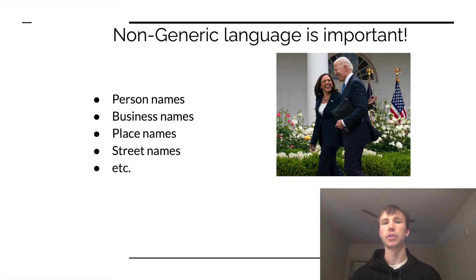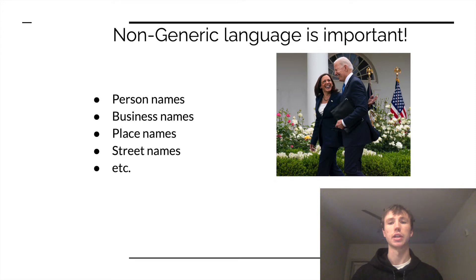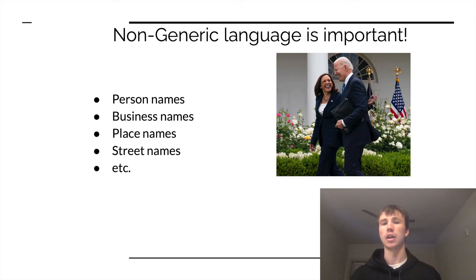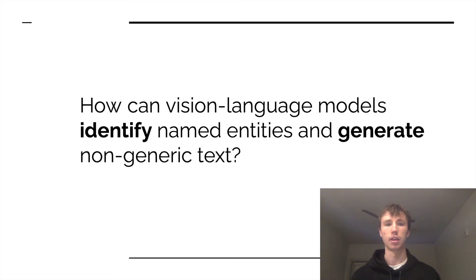In human communication, non-generic language is important. It allows us to precisely discuss entities in our world such as person names and business names. In the image on screen, the most relevant information is the presence of named political figures Kamala Harris and Joe Biden. This motivates my research question, which is how can vision language models identify named entities and generate non-generic text?